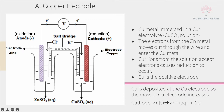The copper ions (Cu²⁺) from the solution accept the electrons from zinc, causing reduction to occur. We know that reduction is accepting electrons. So copper is the positive electrode because it accepts electrons. Copper is then deposited at the copper electrode — the copper ions accept electrons to become copper metal. So the mass of the copper electrode increases as copper ions in the electrolyte keep becoming copper solid, depositing around this electrode.